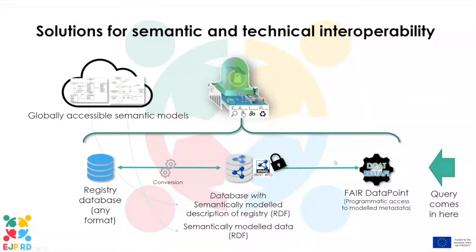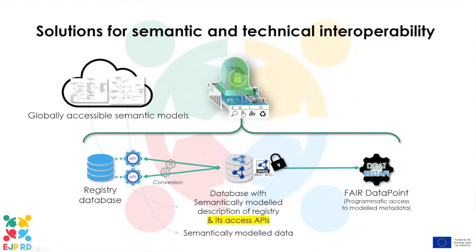A FAIR registry is your original data with two additional elements. When you have a registry database, you often already have one or more interfaces — a user interface and also programmatic interfaces. The same applies: you would also describe these interfaces with that semantic model — semantically modeled description of the registry and its accesses, the application programming interfaces. It just becomes part of the description of your data in machine-readable terms.